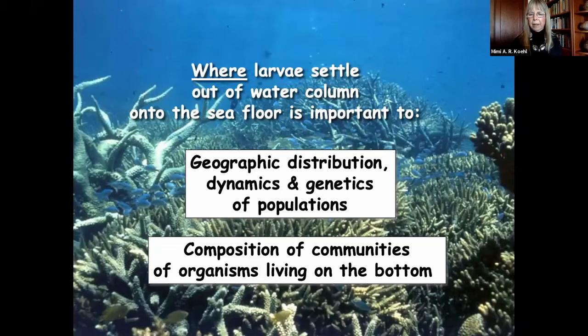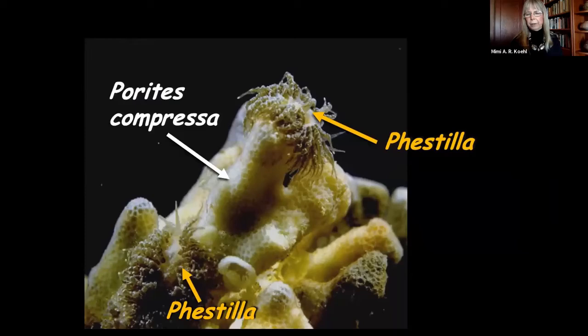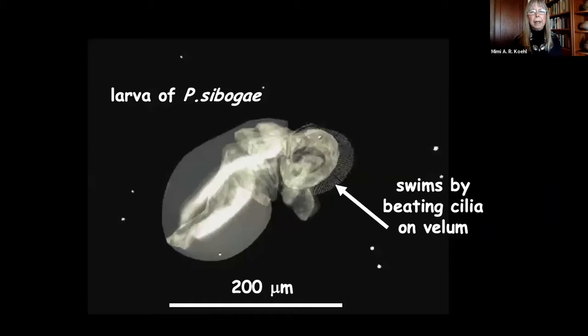I'm interested in how larvae settle out of the water column into a suitable habitat. The example I want to talk about today is the sea slug Festilla sabogi. It lives on coral reefs and they are voracious predators — finicky eaters that only eat one species of coral, Porites compressa. So it's critical that their larvae settle on reefs where Porites is abundant. This is a larva of Festilla; they're tiny, only 200 microns long, and they swim by beating cilia on an organ called the velum.